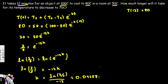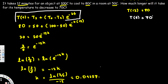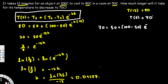Now we have solved for k. The main question is: how much longer will it take for the temperature to decrease to 70 degrees Celsius? We need to find time t when T(t) = 70. We plug into the same equation: 70 = 50 + (100 - 50) * e^(-0.04257t).